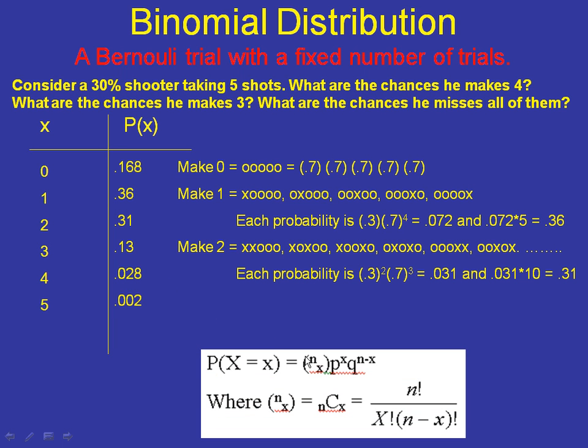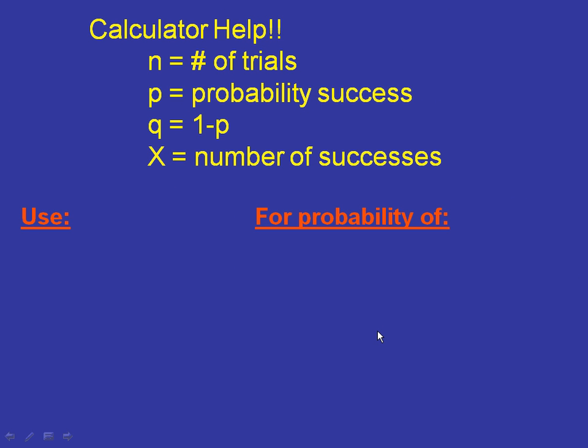We're not going to use these formulas, but I was using this formula right up here. This is a combination question or a combination formula. It shows you how many ways you could make two out of five or three out of five. And then the P and Q is just probability of success and probability of failure and how many powers. We're going to use the calculator instead for this. Yes, that should be good news for you. We have to know these variables to use our TI-83. N stands for number of trials. P, probability of success. Q, probability of failure. X is the number of successes.